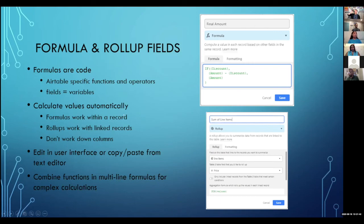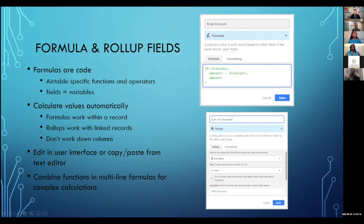The thing about formulas and rollup fields is they calculate automatically — so you don't have to push a button or run them. Formulas are going to work across a record; rollup fields are going to work across linked records. This is one thing people new to Airtable get really frustrated with — especially coming from a spreadsheet point of view — because they say, 'I can do this in Excel, how do I do it in Airtable?' So one thing to understand before writing those formulas: they do not work down columns. Formula fields can take multiple lines and you can nest different formulas inside formulas. I've seen on the Airtable community forums formulas that are 300 lines long.